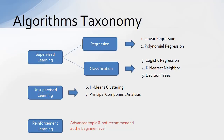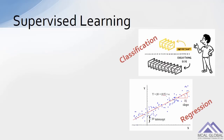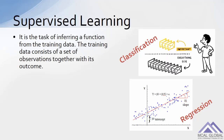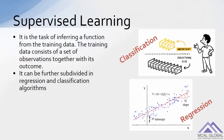Reinforcement learning is an advanced topic and it's not recommended at the beginner level. Before we get into the top seven algorithms, let's look at supervised and unsupervised learning. Supervised learning is the task of inferring a function from the training data. The training data consists of a set of observations together with its outcome. It can be further subdivided into regression and classification algorithms.